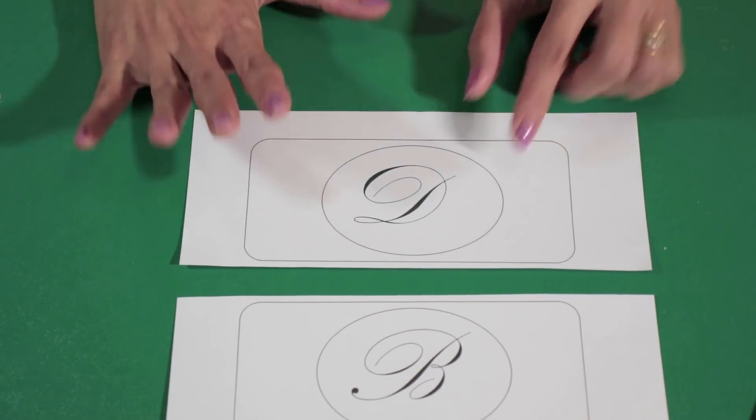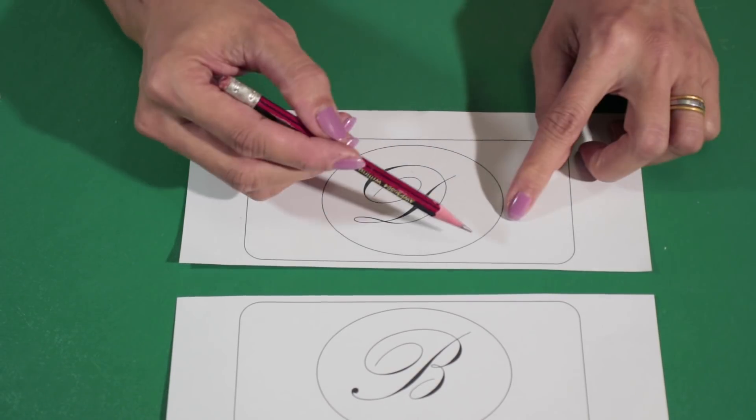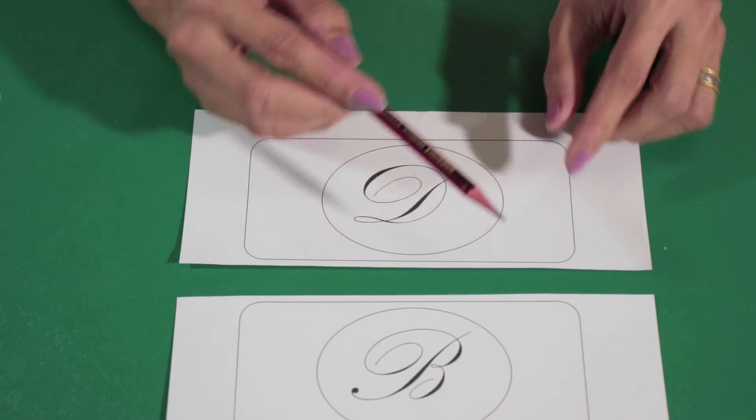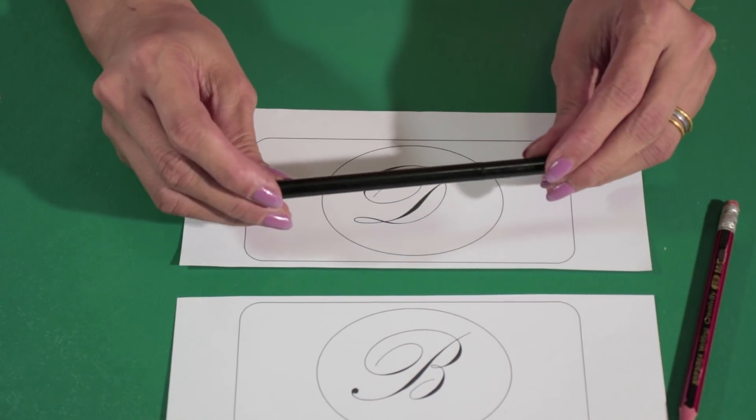So next I'm going to draw some flowers on the edge of the circle here, and use black ink to finish it off.